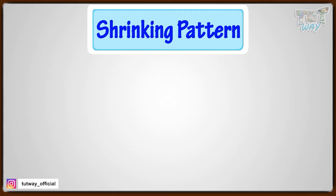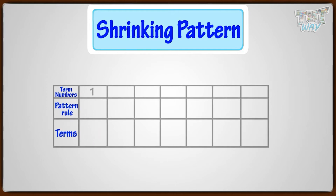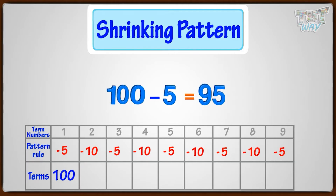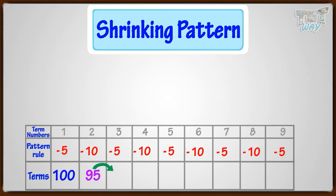Now let's make a shrinking pattern where we have the pattern rule: start at 100, first minus 5, then minus 10. The first term is 100. The next term is the previous term minus 5: 100 minus 5 equals 95. The next term is the previous term minus 10: 95 minus 10 equals 85.